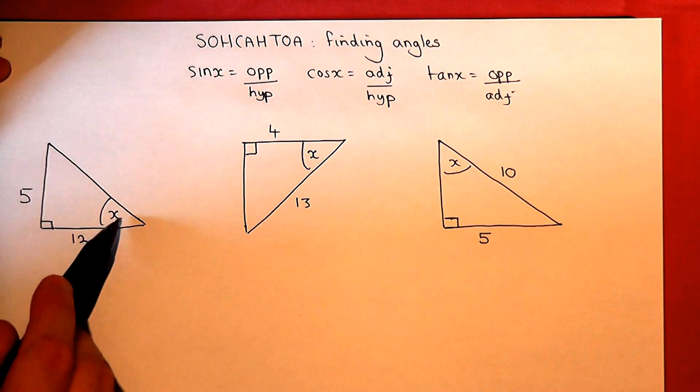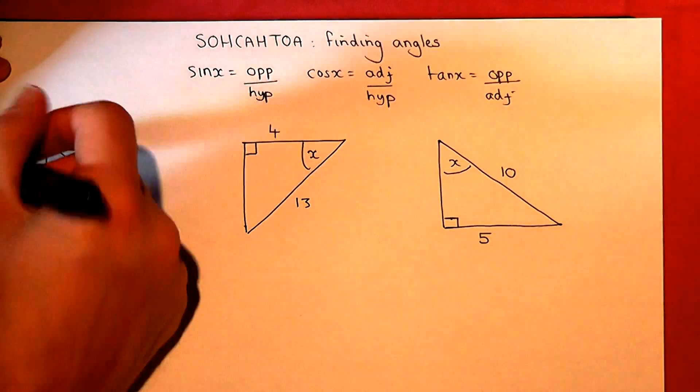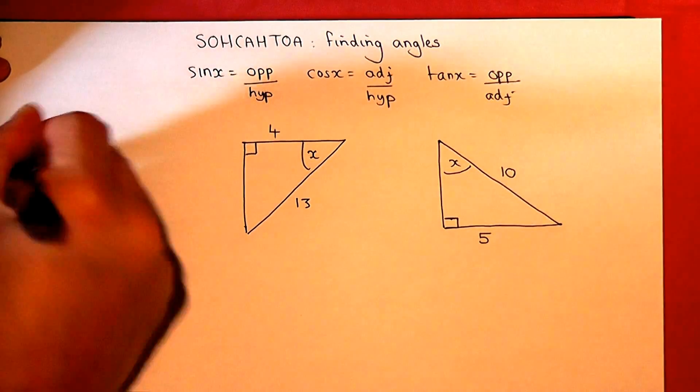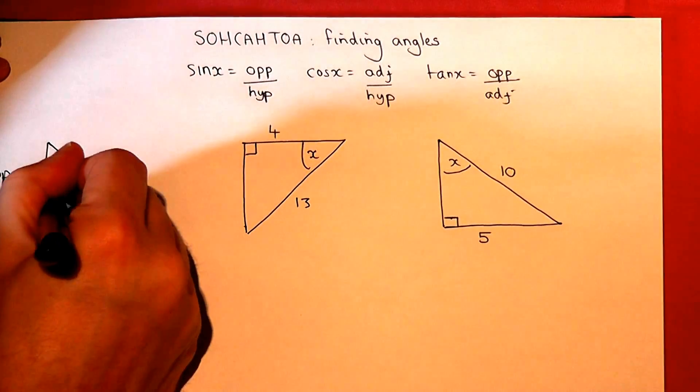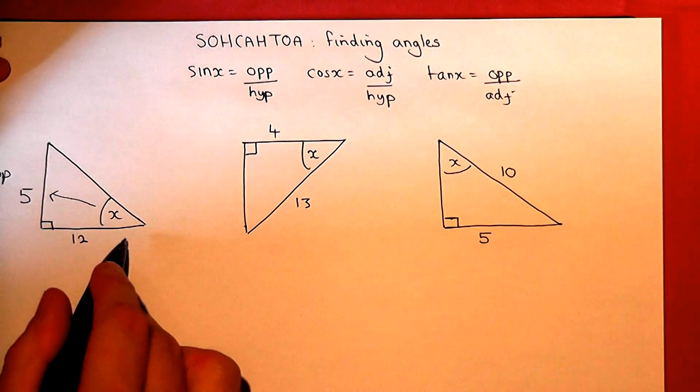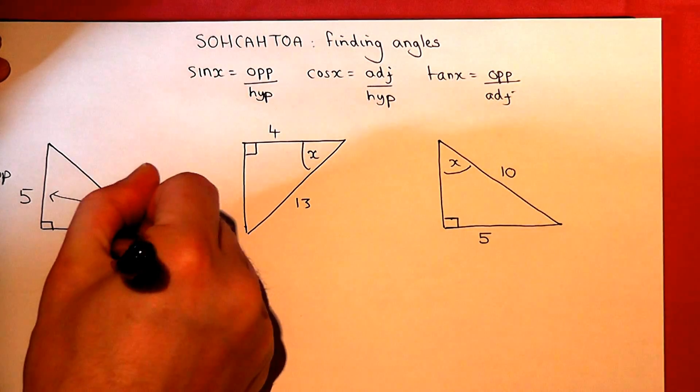But we're given the side opposite the angle. So that's the opposite. And we know the other side, which is next to the angle, that's called the adjacent.